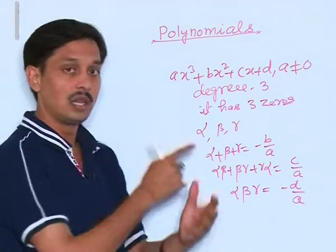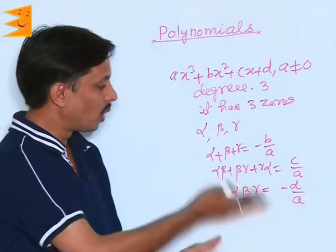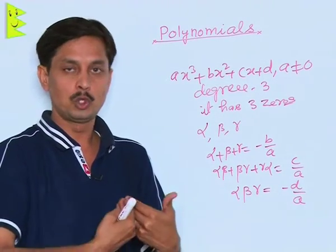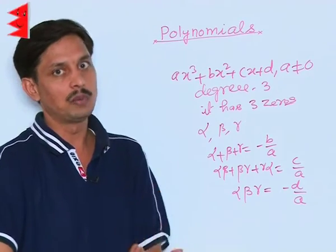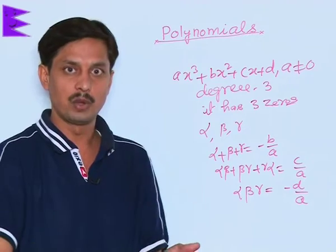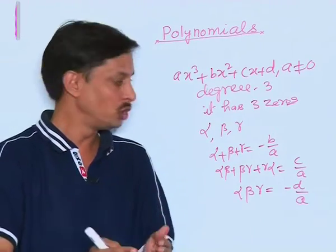It has three relations between the coefficients and zeros. In the previous case, a quadratic polynomial has degree two and two zeros, so there were two relations: sum of zeros -B/A, product of zeros C/A. This has degree three and three zeros.